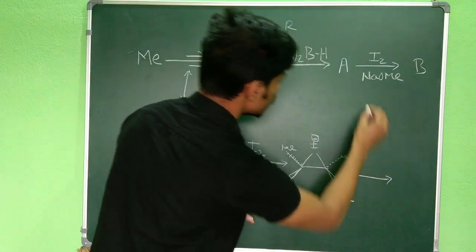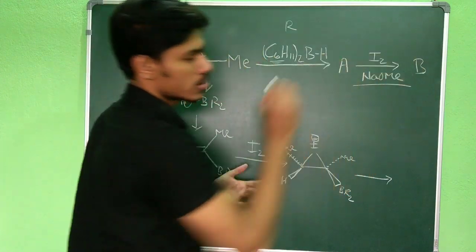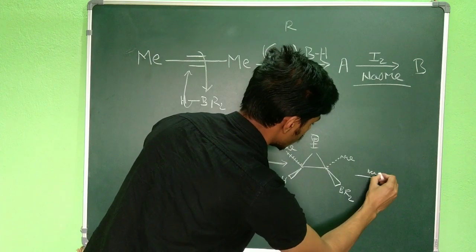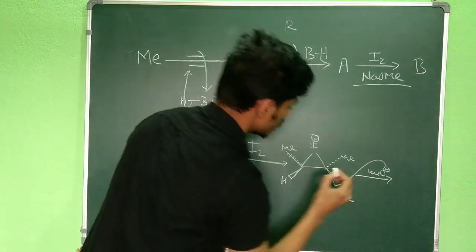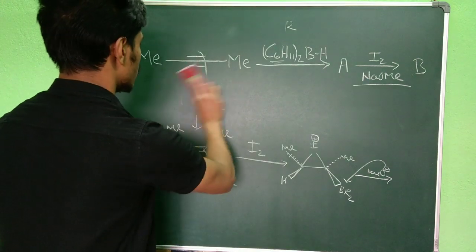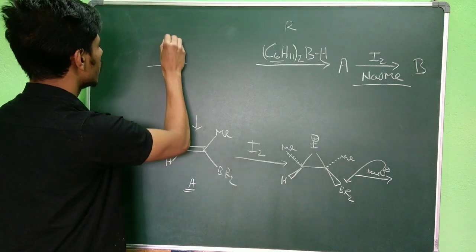This hydrogen is coming forward or towards you, and this methyl is also behind the board and this BR2 is towards you. Now in the next step what will happen? In the same step or the next step, this sodium methoxide is given. So sodium methoxide, what it will do? MeO minus will basically attack on this boron.